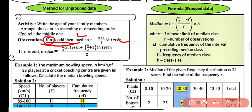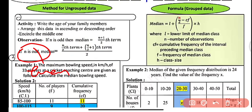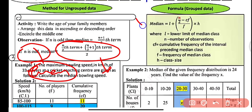Now if n is even, the median will be the average of the (n/2)th term and the (n/2 + 1)th term. When we have an even number of observations, we find the mean of the two middle-most terms, and that will be our median.